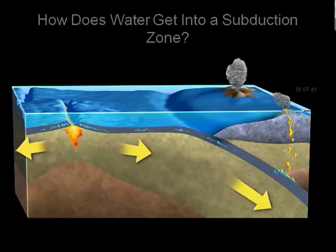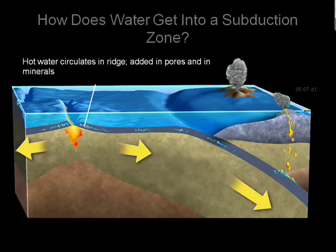How did the water get into the subduction zone in the first place? Well, it probably started back there in the ridge. The water was added between the pores in the rocks, and the minerals themselves take up the water. And later, in the subduction zone, that water is released at depth.